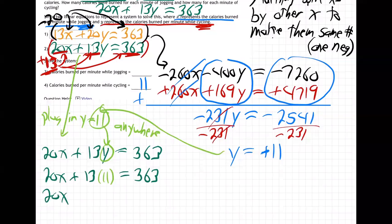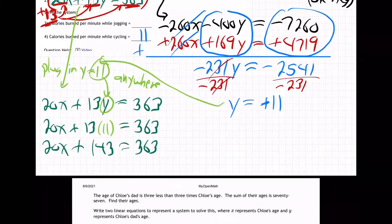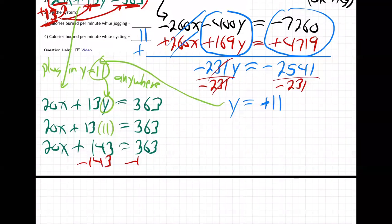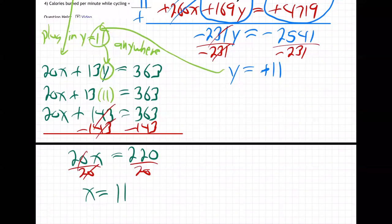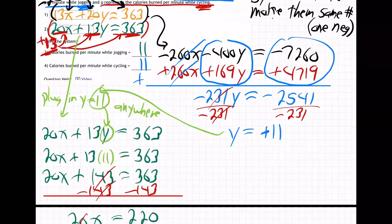20X plus, and 13 times 11 is 143, equals 363. These are long problems aren't they. Subtract 143, 20X equals what's that, 220. Last step, divide by 20, and X is 11. They're both 11. Okay, so they're both 11. There we go.